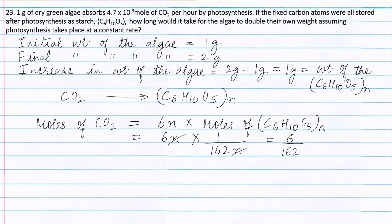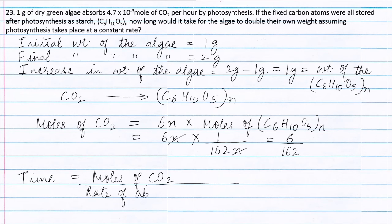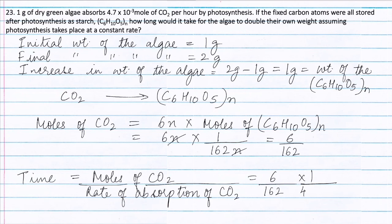Time required for the algae to double its weight: time is equal to moles of carbon dioxide divided by rate of absorption of carbon dioxide. This is equal to (6 divided by 162) multiplied by (1 divided by 4.7 x 10 to the power minus 3), and this is equal to 7.88 hours.